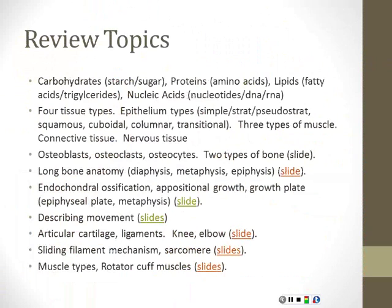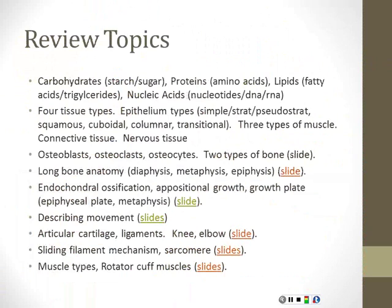The other joint we looked at was the elbow. Important to remember that it is three bones and three articulations: the humerus connects with the ulna, the radius connects with the humerus, and the ulna connects with the radius. The elbow joint is complicated because it's three articulations — three different bones all having a joint with one another.